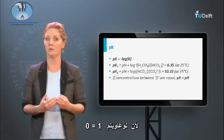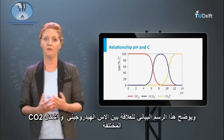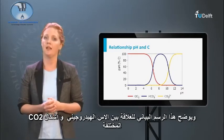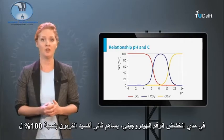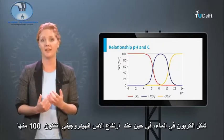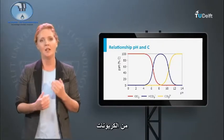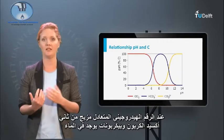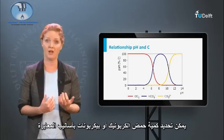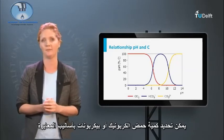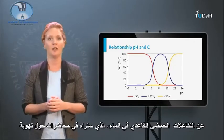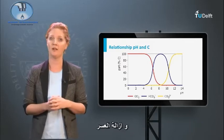This graph shows the relationship between pH and different CO₂-related species. In the low pH ranges, carbon dioxide contributes 100% to the carbon in the water, while in the higher pH ranges 100% consists of carbonate. Around neutral pH, a combination of carbon dioxide and bicarbonate is present in the water. The exact amount of carbonic acid or bicarbonate can be determined with titration methods. This must have given you a quick introduction to acid-base reactions in water, which we will return to later in the lectures about aeration and softening.